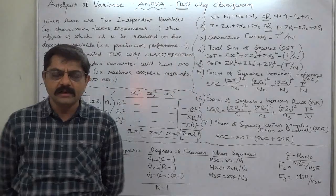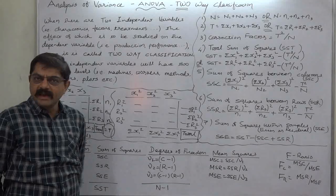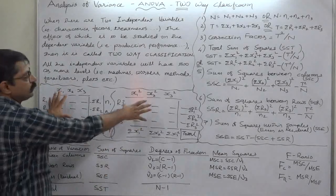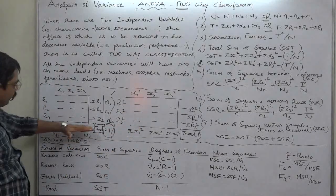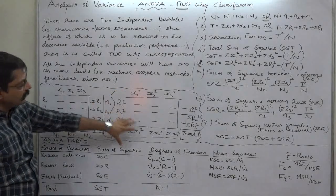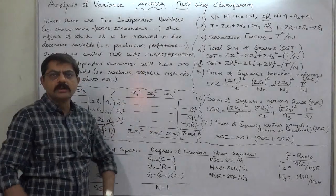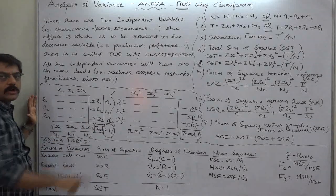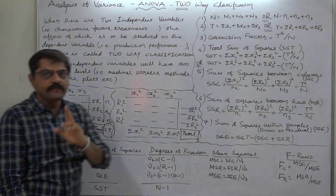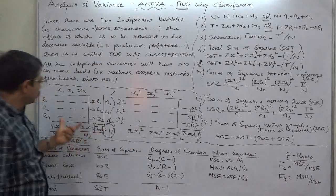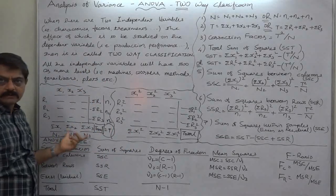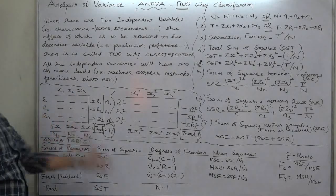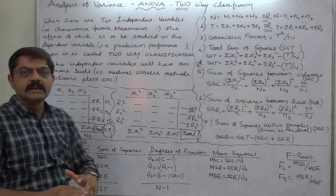Now, what about the procedure? More or less, the procedure is the same as in case of one-way classification. We have to prepare two tables — columns, total of all the columns, squared values of all the elements, and again total of all the columns. But additionally, we are going to find the total of all the rows. In case of one-way classification, columns can have different numbers of elements, but in two-way classification there should be an equal number of elements in all columns because we consider rows as well.